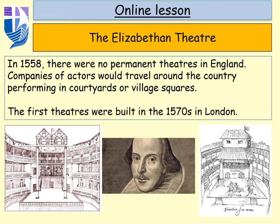When Elizabeth became Queen of England in 1558, there were actually no permanent theatres whatsoever in England. Plays had always been put on — things like mystery plays throughout medieval times — and there were travelling bands of actors. Companies of actors would travel around the country and perform in a courtyard or a village square. The first theatres took on that idea of being designed with the stage in the middle and the audience surrounding it, and the first theatres began to be built in London in the 1570s.